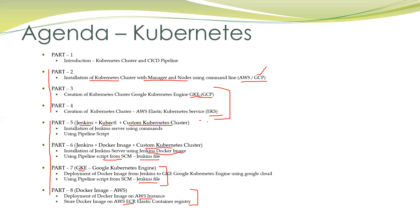For demos five and six, we can use either AWS or GCP — whichever cluster we created in part two. So we can do the same thing in either AWS or GCP. But in the demo, I will use GCP for both demos five and six, though we can do the same thing in AWS. This is common for both.